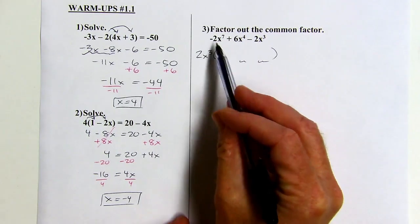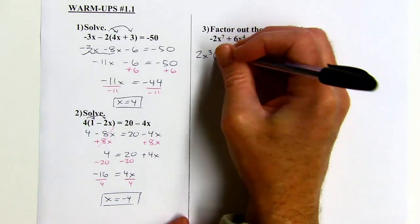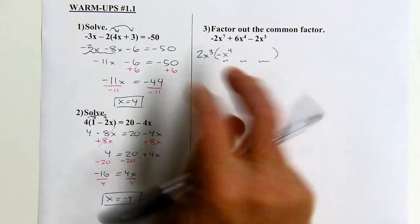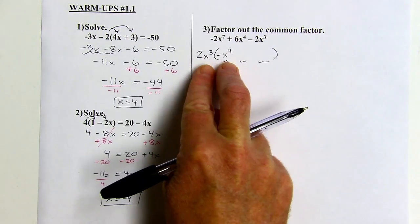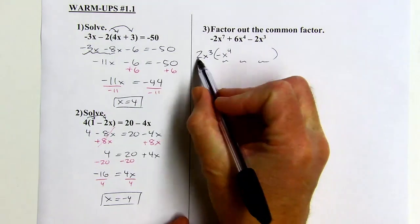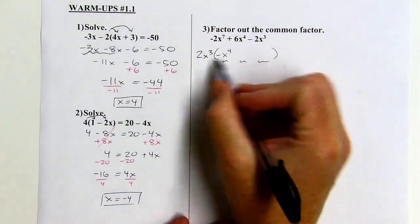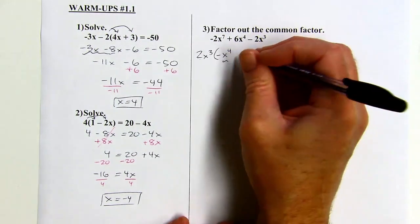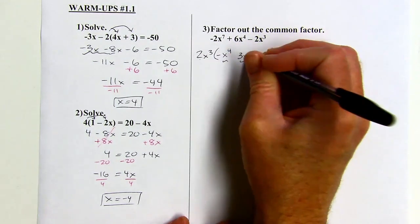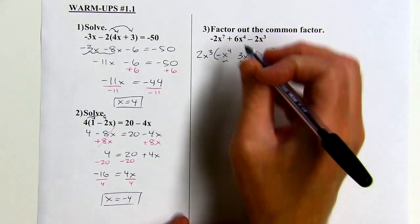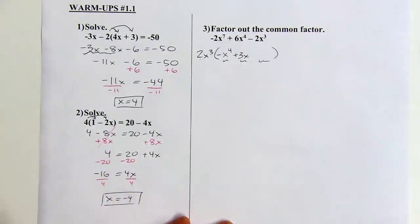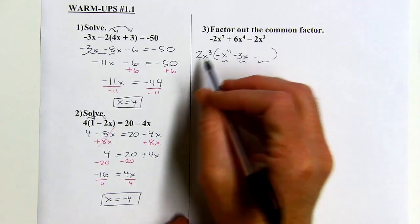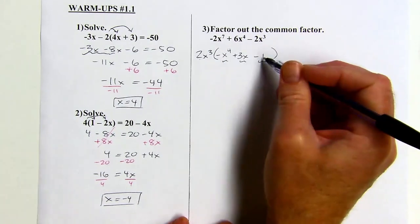2x to the third times something is negative 2x to the seventh. Well, it would be negative x to the fourth, right? If you multiply these two things together, you'd add the exponents, and then 2 times negative 1 is negative 2, okay? 2x to the third times something is 6x to the fourth, while 2 times 3 is 6, and x to the third times x would be x to the fourth. And I want to separate that from the first term with an addition symbol, okay? And then, I'd want to change the sign again. And so, I'm really just changing the sign here, so I'm multiplying by negative 1, okay?